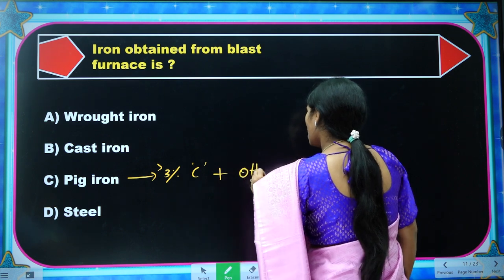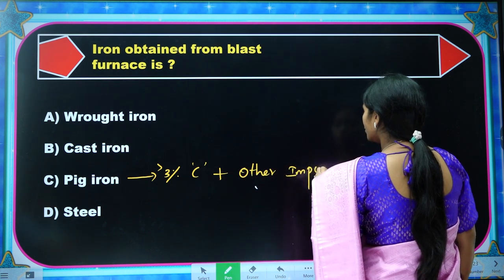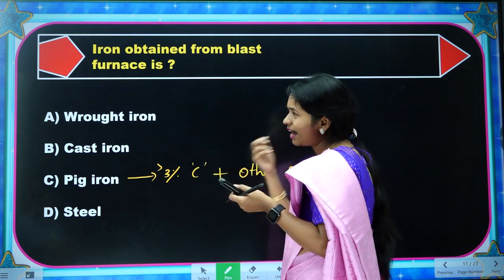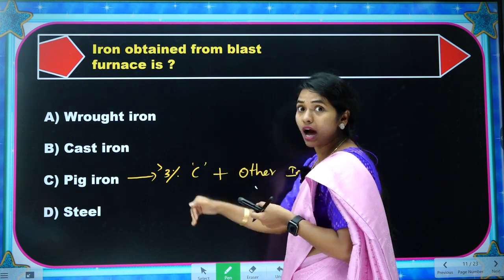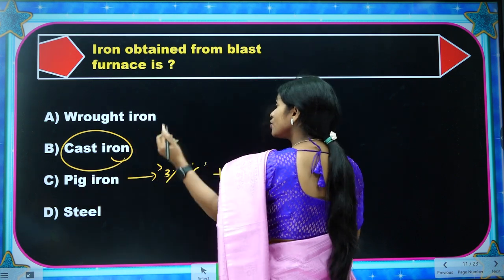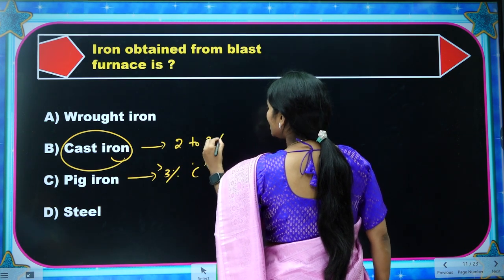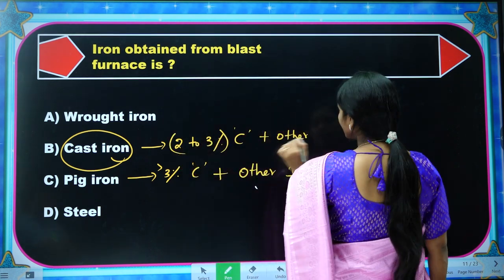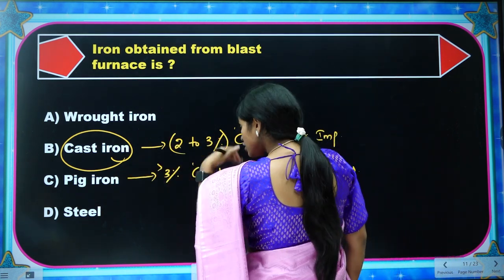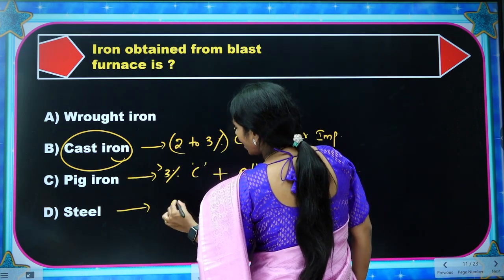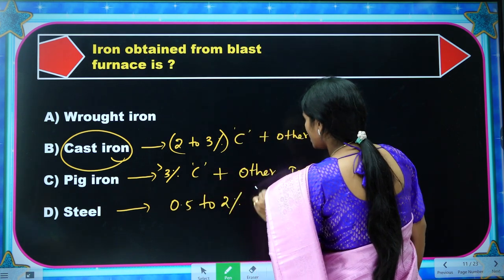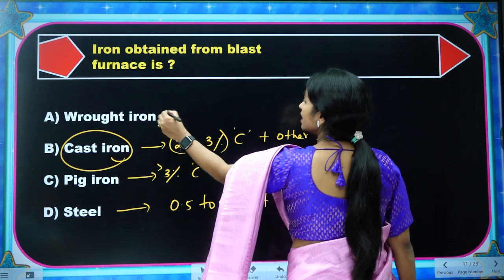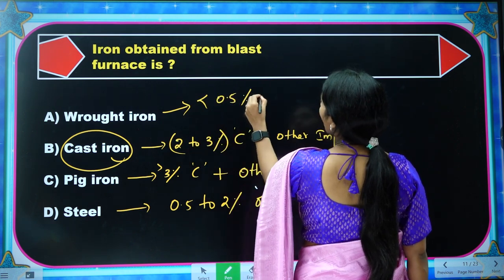Pig iron is brittle and not very useful, so we reduce the carbon percentage to get cast iron, which has 2–3% carbon plus other impurities. We reduce it further to get steel, which has 0.5–2% carbon plus other impurities. If you reduce the carbon percentage, the purity of iron increases. The best form has less than 0.5% carbon.